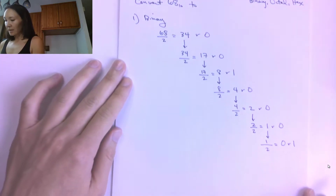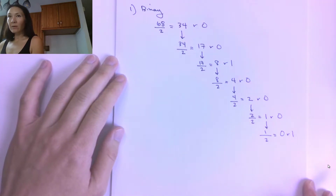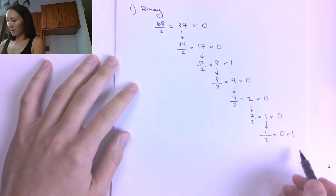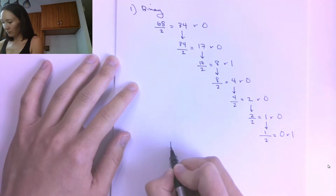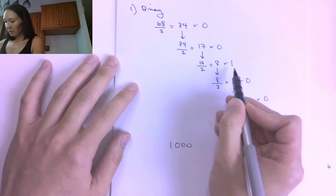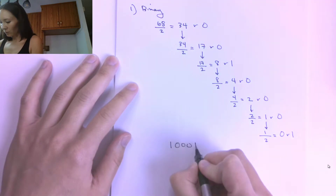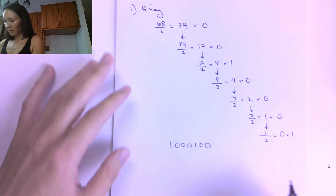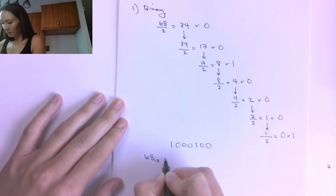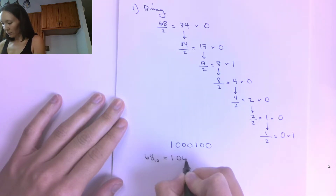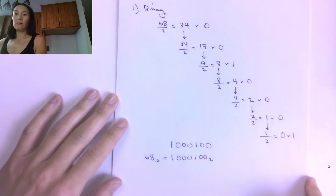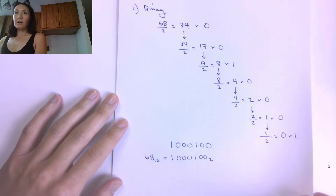To get our binary number, we collect all the remainders from bottom to top. So we get: 1, 0, 0, 0, 1, 0, 0. That means 68 in base 10 is equal to 1000100 in base 2.